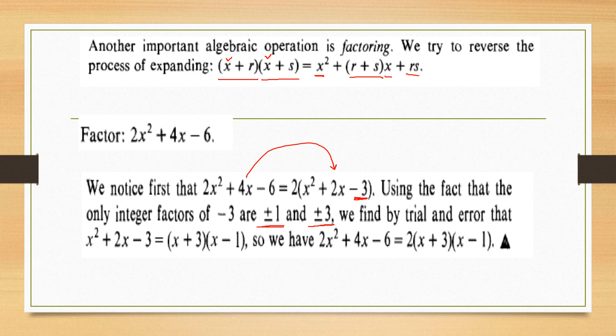By trial and error we find the correct factor pair, and therefore this given expression is equal to the product of three factors: 2 times (x + 3) times (x − 1).